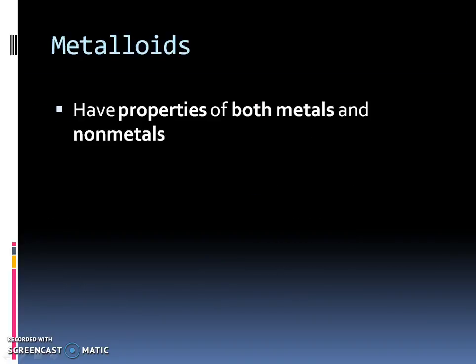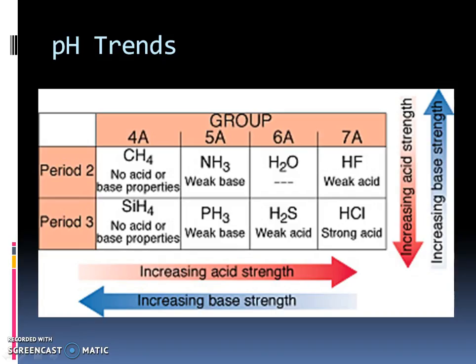And a metalloid is a particular element that has both properties of metals and nonmetals or is going to act one way more than the other depending on the situation. So if we look at pH trends, and this is going to be a little bit more important when we get into acids and bases, but going back to those reactions, the metallic oxide makes a base. Well, look at this. Here's your base strength is on this side. So as we get closer to the metals, we make more of a base. And increasing acid strength, if we go this way, as we're increasing more nonmetallic characteristics, we're going to make an acid. So that's something to think about.